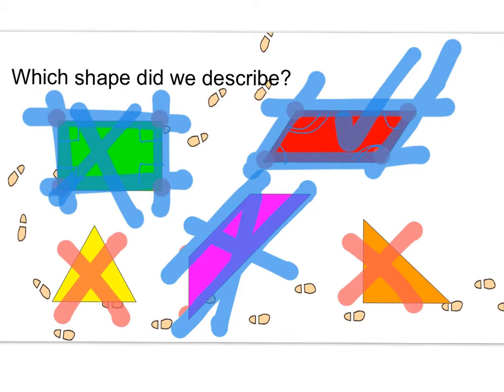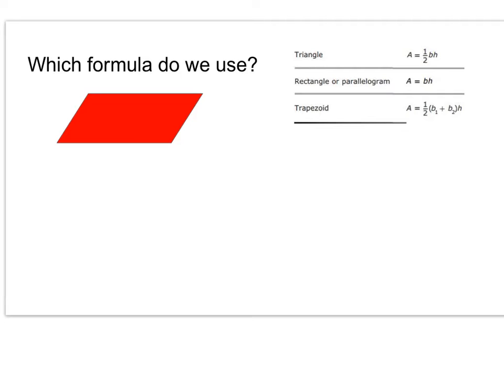It is real important to know your classifications of shapes because a lot of times they're going to give you verbal clues or written clues as to which shape it is. We said our shape was a parallelogram. So we are going to use that formula right there. So I want you to write that formula down. And I want you to draw a picture of your shape in your interactive notebook. We're going to work on solving it.